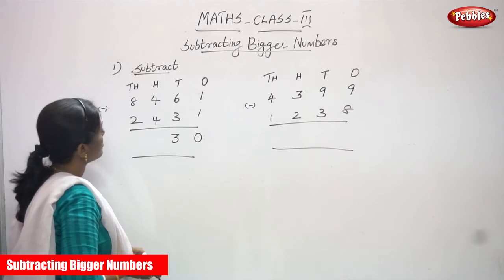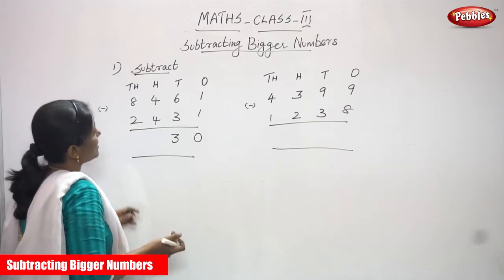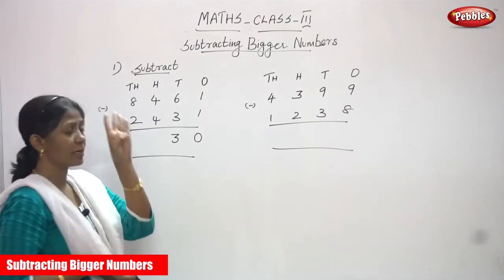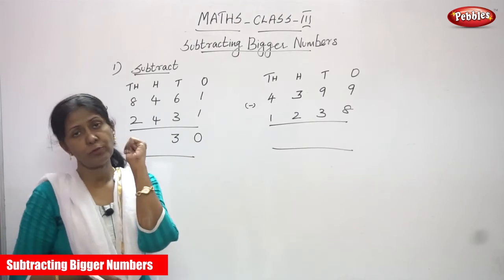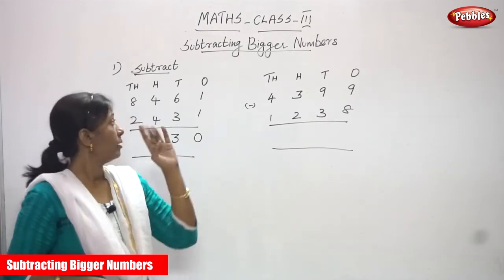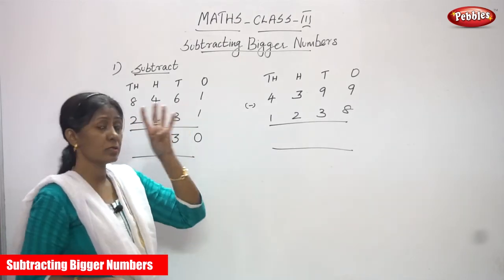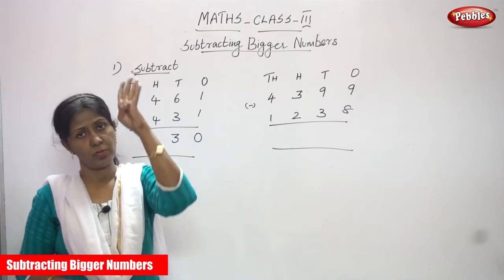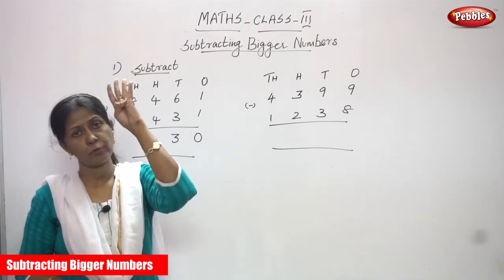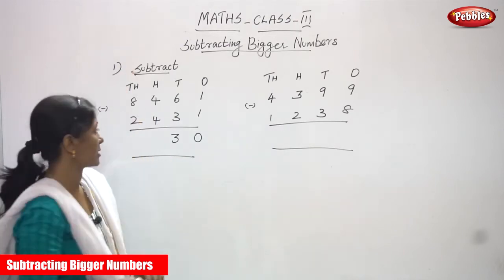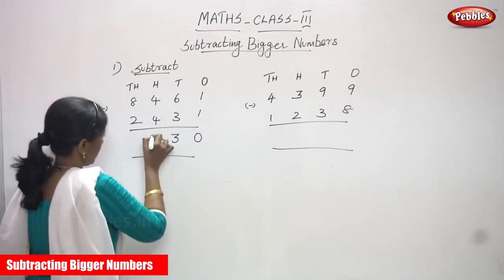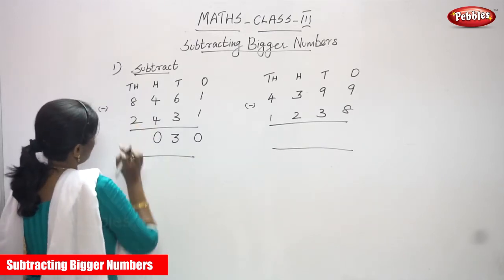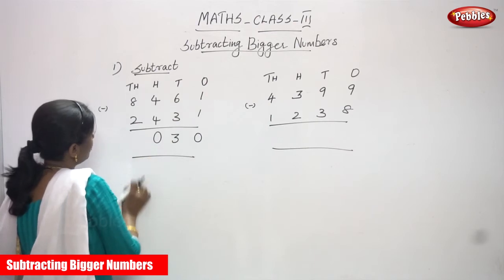Then the 100s place — what is the number? 4 minus 4. You can get 4 on your fingers and you have to fold all 4 fingers. So you get 0. And now the 1000s place.